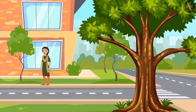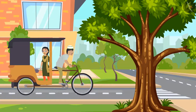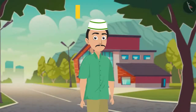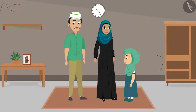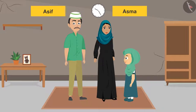After finishing work at Raju's house, Pushpa catches a rickshaw to go back home. Asif is the name of the rickshaw puller taking her home today. After dropping Pushpa, Asif heads back to his own home. There are three members in Asif's family: Asif, his wife Asma, and their lovely daughter Hina. Hina is Asif and Asma's adopted daughter, and they both dote on her.